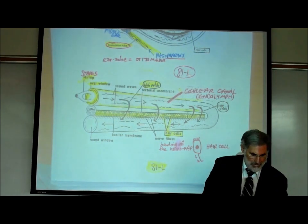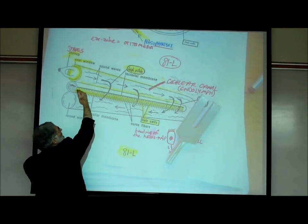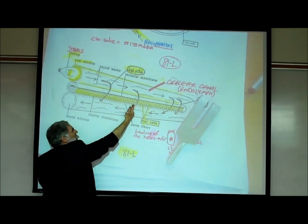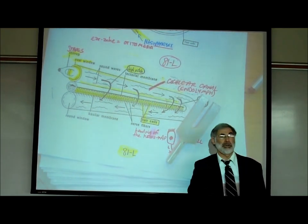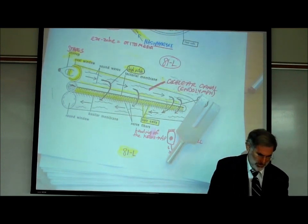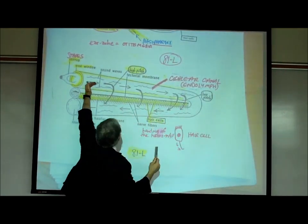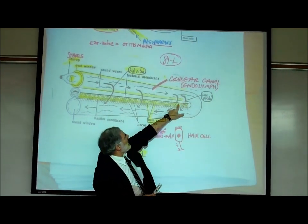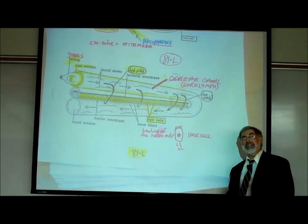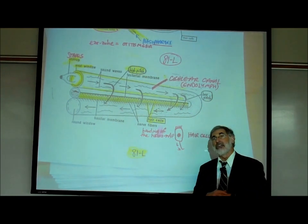A medium pitch sound is a slightly slower frequency and creates a longer wave. This longer wave in the fluid bends the hairs of the hair cells located further along, and they send a signal to the brain, which interprets it as medium pitch sound. And a lower pitch sound creates an even longer wave, which bends the hairs or cilia of the hair cells way at the end of the cochlea, and they send the signal to your brain. So depending upon which sensory neurons send signals to your brain, your brain perceives high, medium, or low.